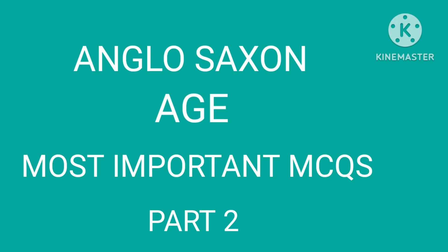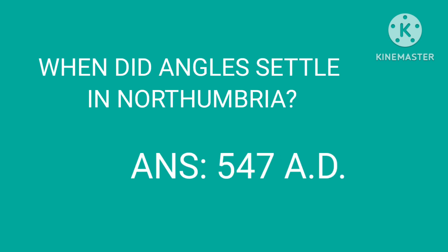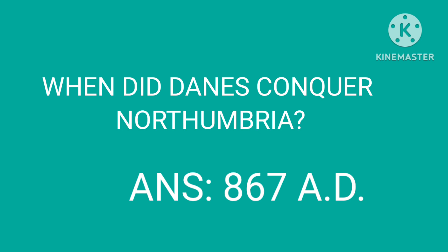Hello viewers, today I will discuss MCQ questions and answers of the Anglo-Saxon section, Part 2. When did the English settle in Northumbria? The answer is 547 AD. When did the Danes conquer Northumbria? The answer is 867 AD.